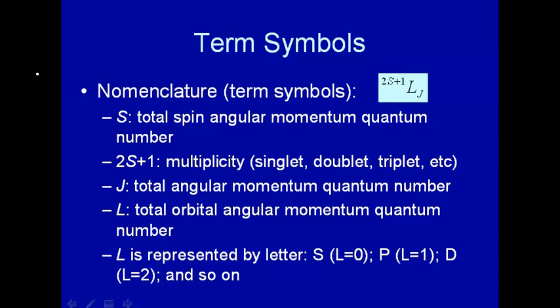We've talked about Russell-Saunders coupling and how we can add up all the intrinsic spins to get a value S, total spin angular momentum, and how we can add up all the orbital angular momentum of all the electrons to get a total L, and how we can then couple the total intrinsic spin with the total orbital angular momentum to get a total value of angular momentum, a total angular momentum given the symbol J.